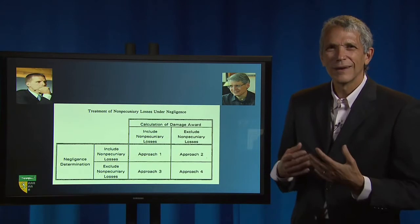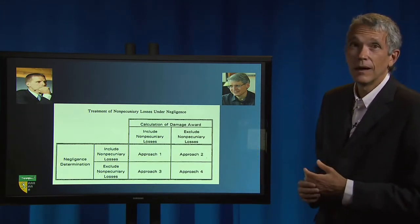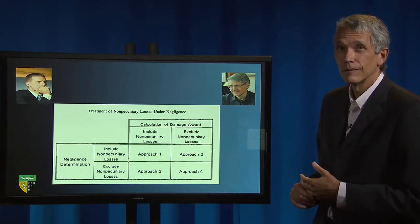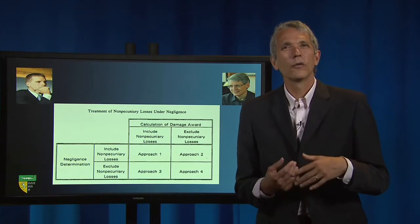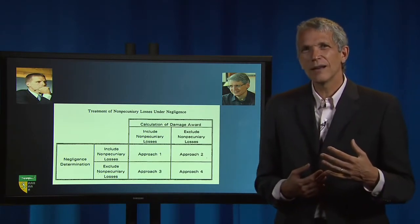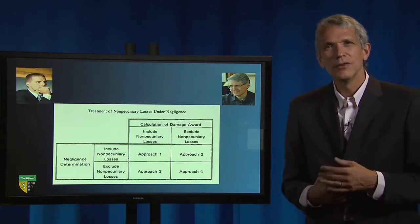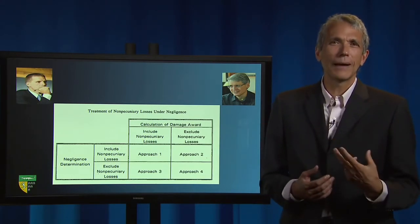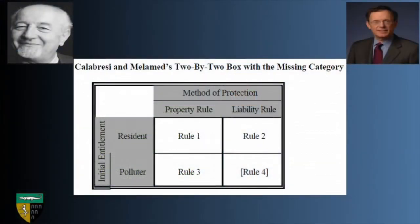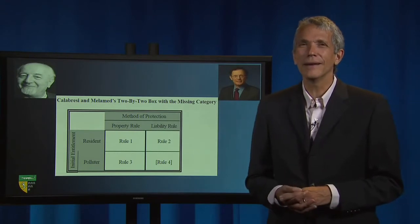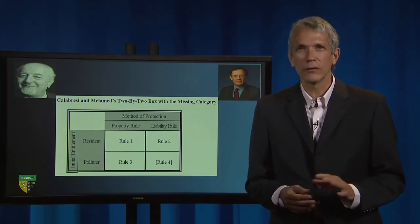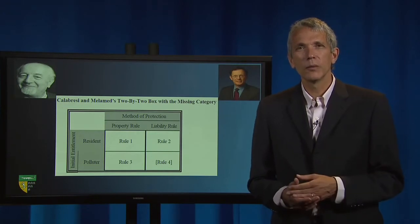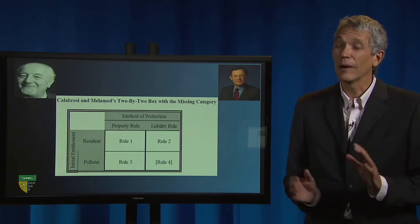Can you see why approach two might be superior to approach four? Whenever you learn that the law over time or in different jurisdictions has taken three different approaches to regulation, you should ask yourself whether it's possible to display these approaches in a two-by-two matrix and thereby uncover a hidden fourth approach. This method is just what Professor — then Dean, now Judge — Guido Calabresi and his co-author Doug Melamed did in one of the most cited law review articles of all time: 'Property Rules, Liability Rules, and Inalienability: One View of the Cathedral.' It's my favorite law review article.